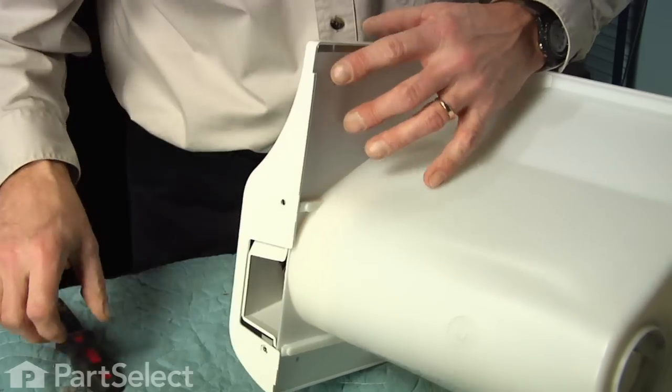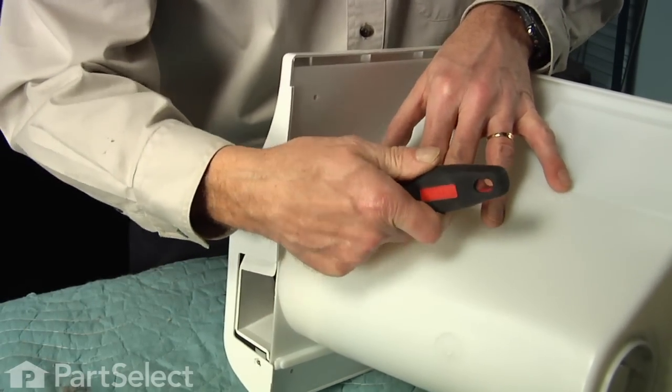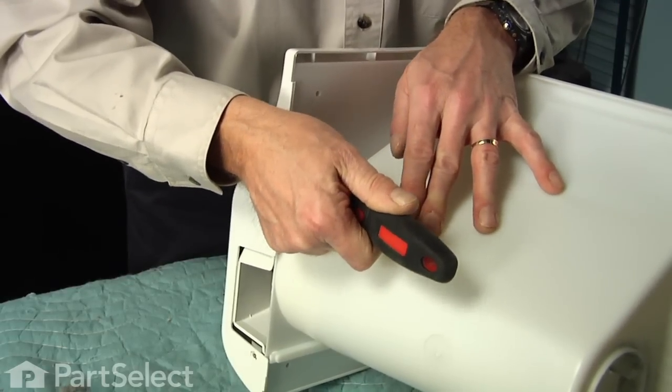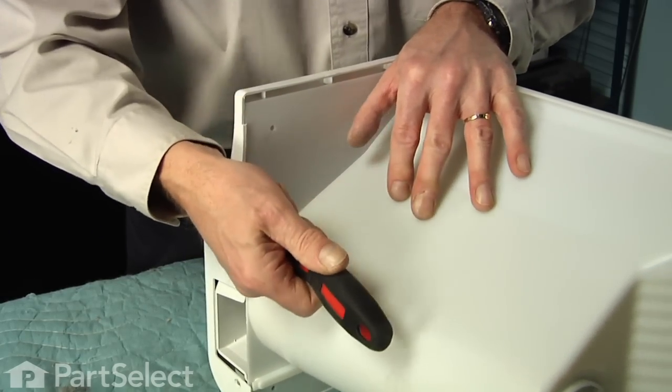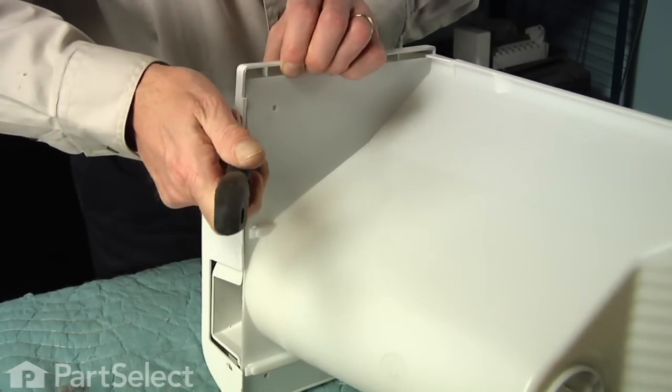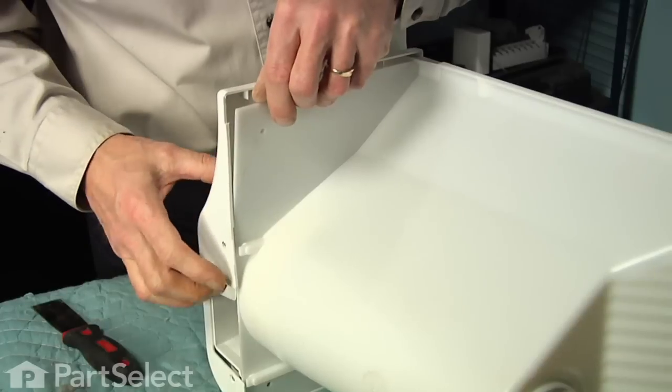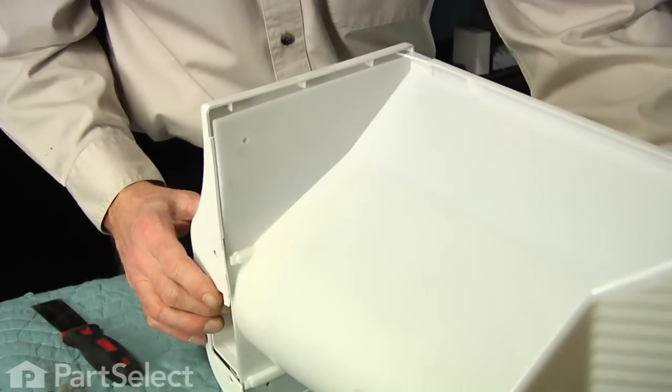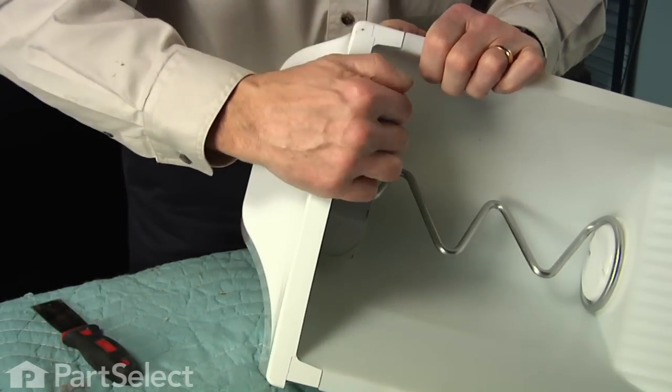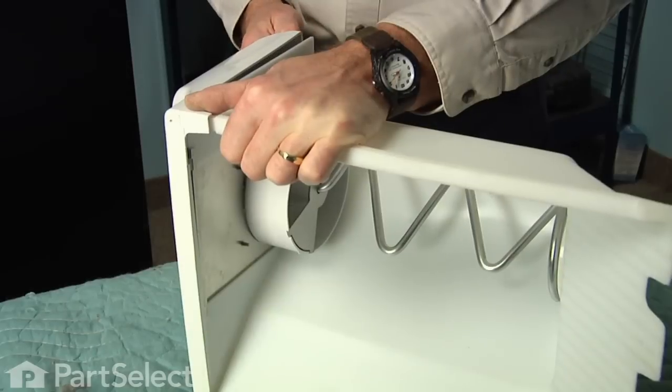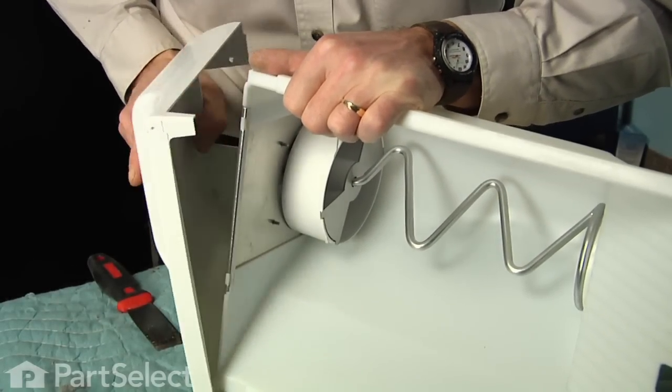We need to disengage this lip, and we'll use our putty knife there to pry it up far enough, disengage it from the bin itself, and we can turn it over. We'll lift the top side off, there's a lip across the front of it, and then we can remove the cover.